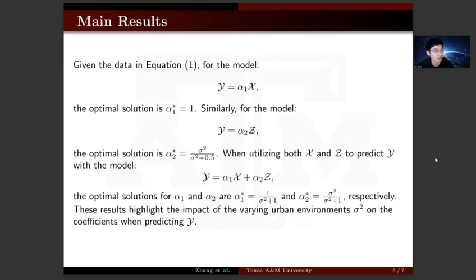Our main findings reveal that, using the structural equation model in equation 1, predicting y only with x, the optimal solution for α₁ is 1. Using z to predict y, the optimal α is σ² divided by σ² plus 0.5. When using both x and z to predict y, the optimal solutions are 1 divided by σ² plus 1, and σ² divided by σ² plus 1, respectively. These outcomes highlight the significant impact that varying urban environment σ² has on the coefficients used to predict y.